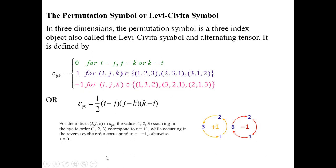To identify which set gives epsilon_ijk the value +1, consider the indices in cyclic order. If the values 1, 2, 3 occur in clockwise order, epsilon equals +1. Starting the clockwise cycle and leaving one index at a time gives three ordered triplets: (1,2,3), (2,3,1), and (3,1,2). These correspond to epsilon_ijk equal to +1.